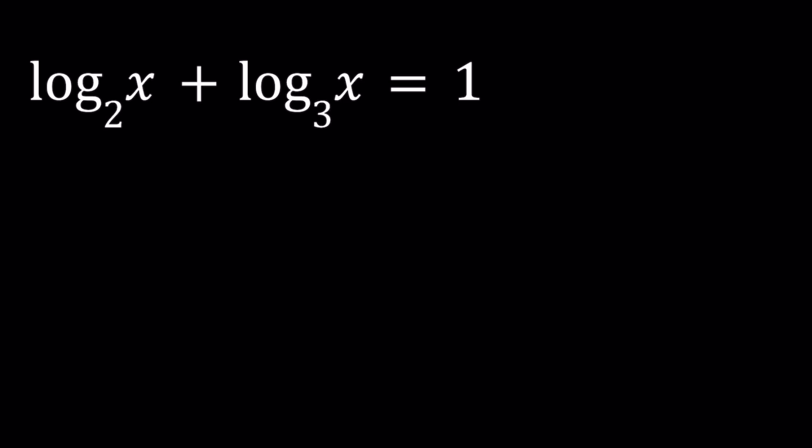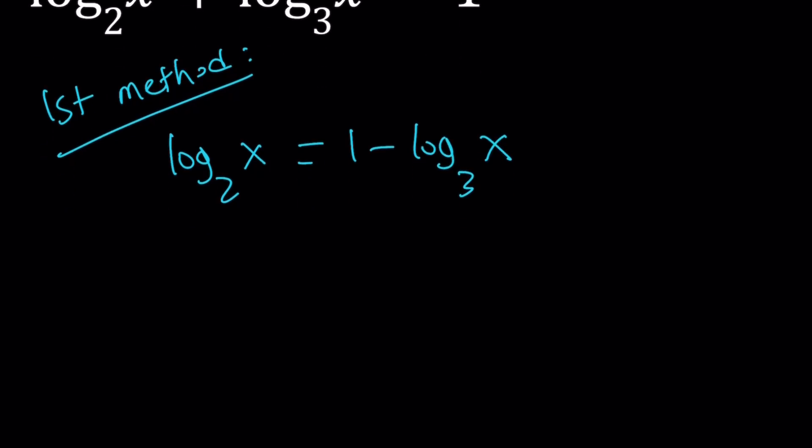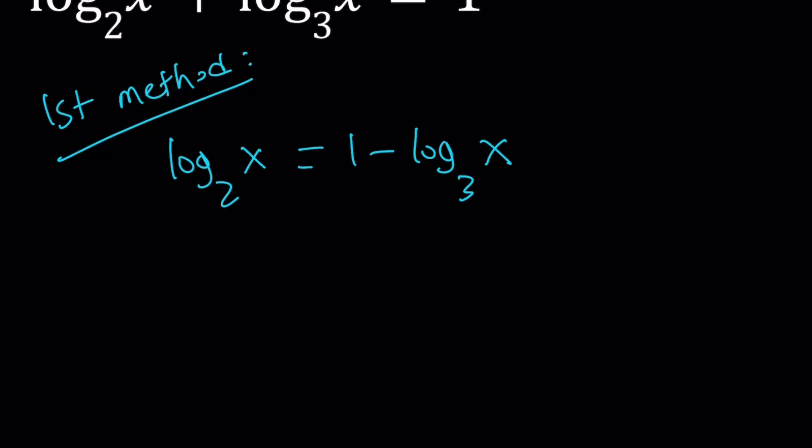Let's get started with the first method. I'm going to isolate log x with base 2. If you subtract log x with base 3 from both sides, you get the following. And now, here's the problem.